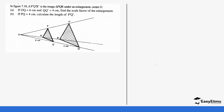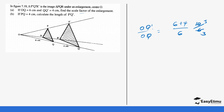You can also be given images with a center of enlargement and asked to find the length. For example, you have object PQR and image P'Q'R' with center of enlargement O. We are told OQ = 6 cm and QQ' = 4 cm, so OQ' = 6 + 4 = 10 cm. The scale factor is OQ' divided by OQ, which is 10 over 6, simplifying to 5 over 3.